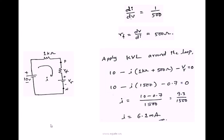So KVL is: 10 volts minus current flowing through 1 kilo ohm minus current flowing through forward resistance minus V gamma. So 10 minus I times 1500 minus 0.7. So I equals 10 minus 0.7 by 1500. Finally I equals 6.2 mA.